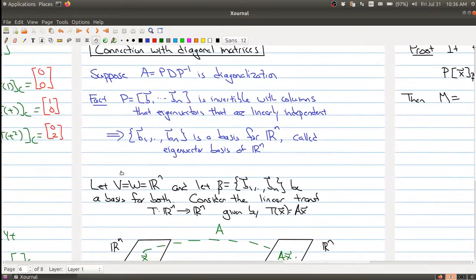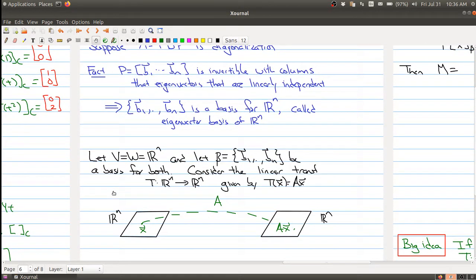Now what we want to do is take what we've done before and specialize it to the following case. Before V and W could have been different vector spaces, but now we're saying let V and W both be equal to Rn, and we're not going to have two different bases.